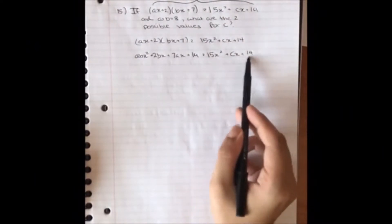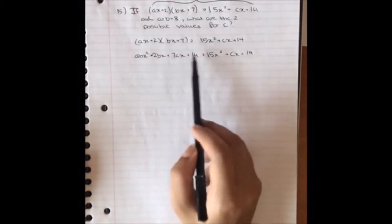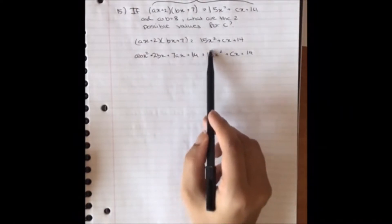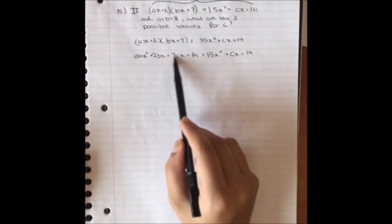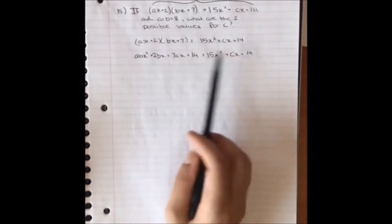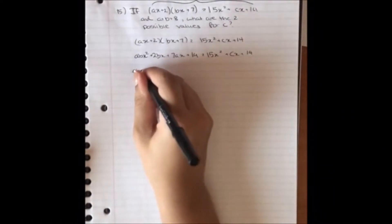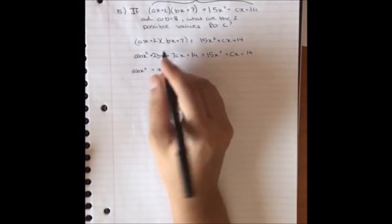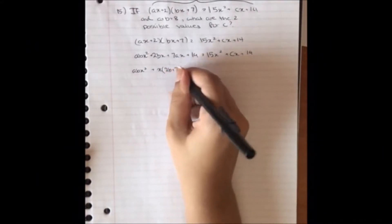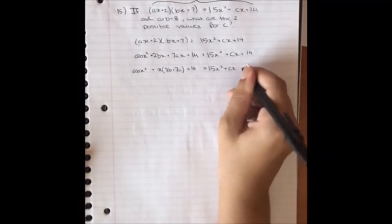That equals 15x squared plus cx plus 14. The first thing I notice is that the only whole numbers on both sides of the equation are 14, which means the other factors have to be equivalent to each other. So ab has to equal 15, and everything that is an x coefficient has to equal c. I'm going to simplify by factoring out x: abx squared plus (2b plus 7a)x plus 14 equals 15x squared plus cx plus 14.